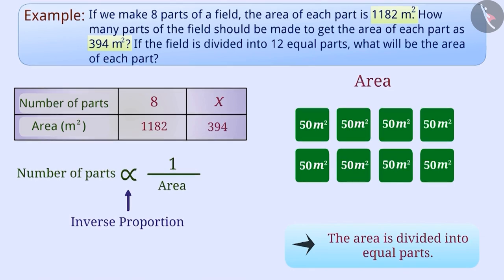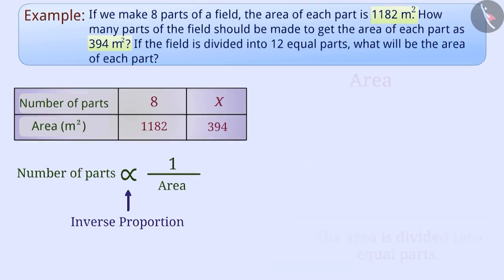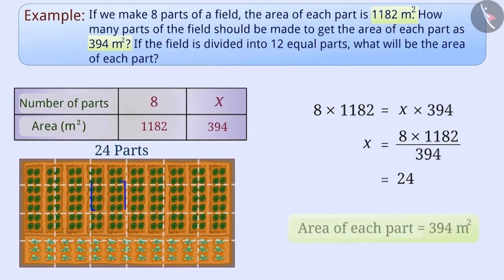In terms of inverse proportions, we can say that 8 × 1182 = x × 394. That is, x = (8 × 1182) ÷ 394 = 24. In this way, the area of each part will be 394 m² when 24 parts of the total area are made.